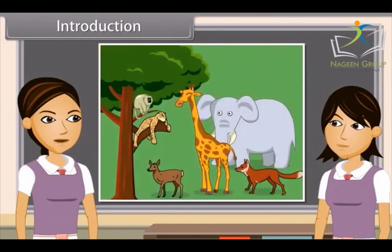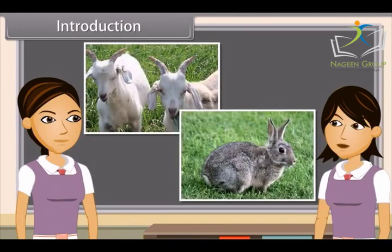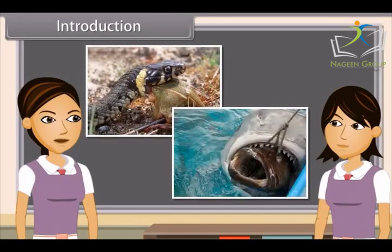There is a wide variety of animals on the basis of their type of food. Many animals eat only plants like grasses and leaves, while some eat other animals. The big fish eat small fish, birds eat worms and insects, snakes eat frogs, and some insects eat dead bodies of animals.